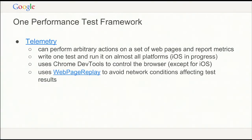So how do we actually run these tests? We have one performance test framework used across almost all platforms called Telemetry. It can perform any arbitrary actions on a set of web pages and report metrics that we upload to these dashboards. Telemetry is a Python framework that works on all platforms — Windows, Linux, Mac, Chrome OS, Android. Not yet on iOS — we are working on that. It uses Chrome DevTools to control the browser.